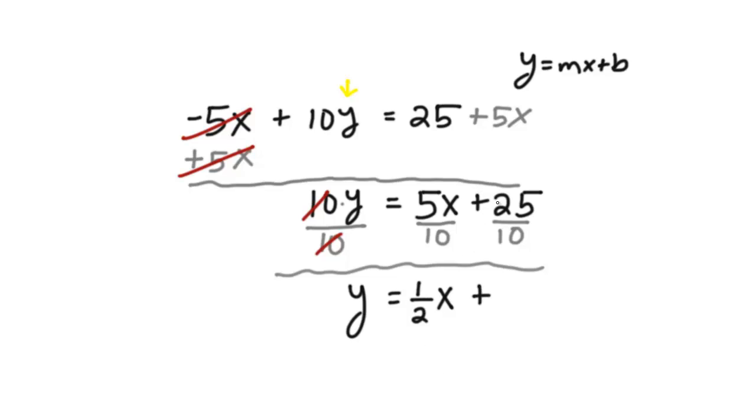And then plus 25 over 10, since 5 goes into 25 five times, we'll leave that as 5. And then 5 goes into 10 twice, we have that. So here we go.